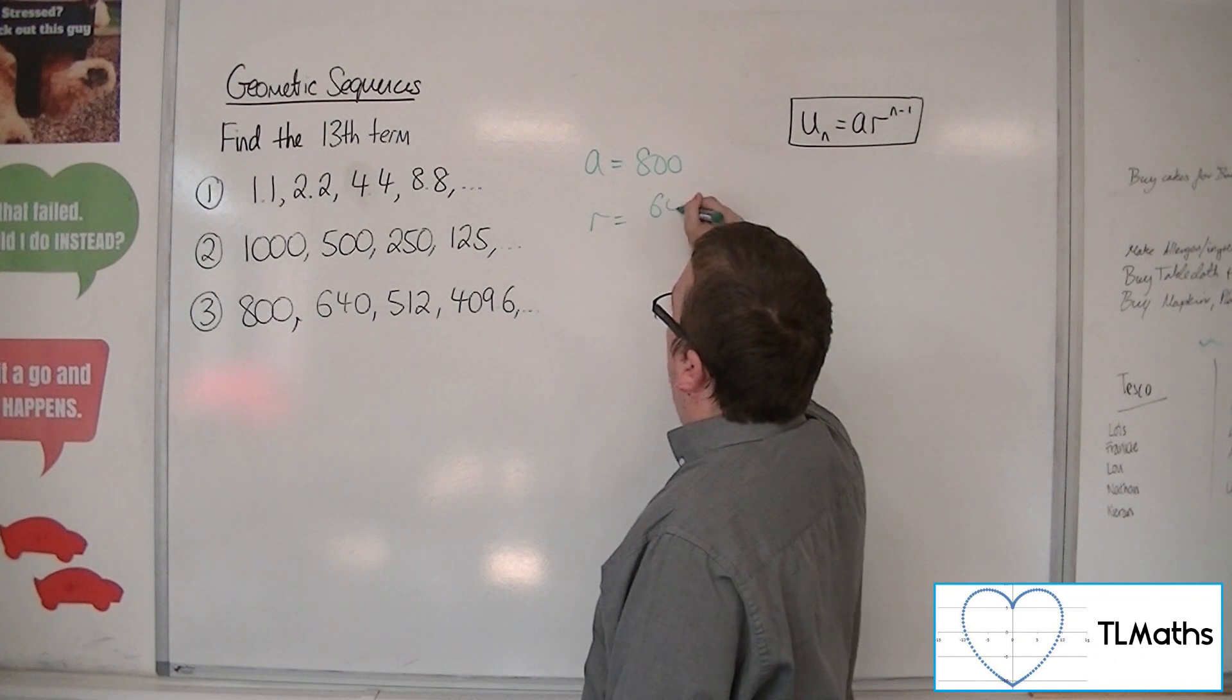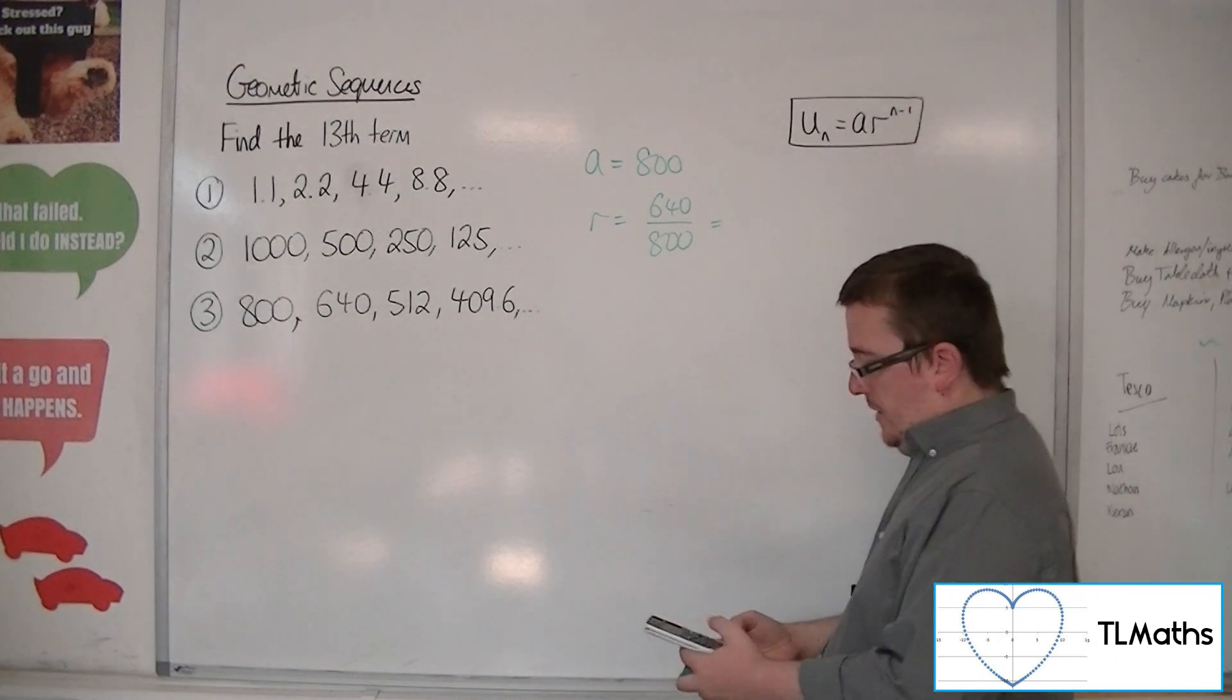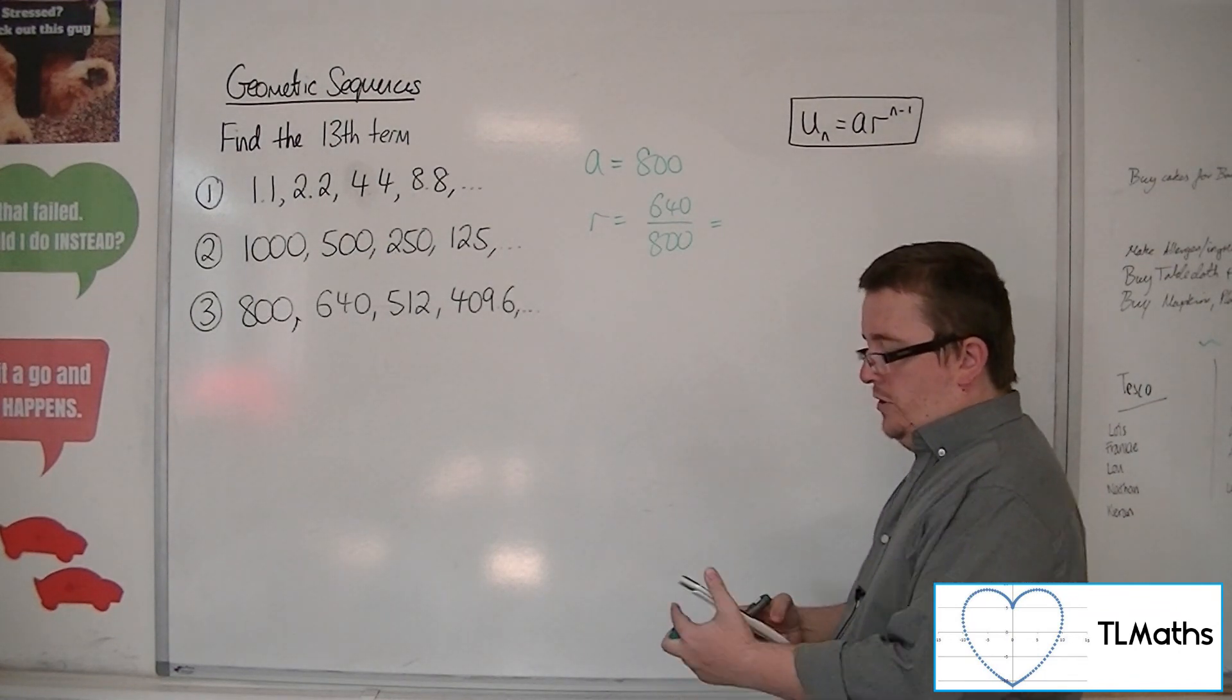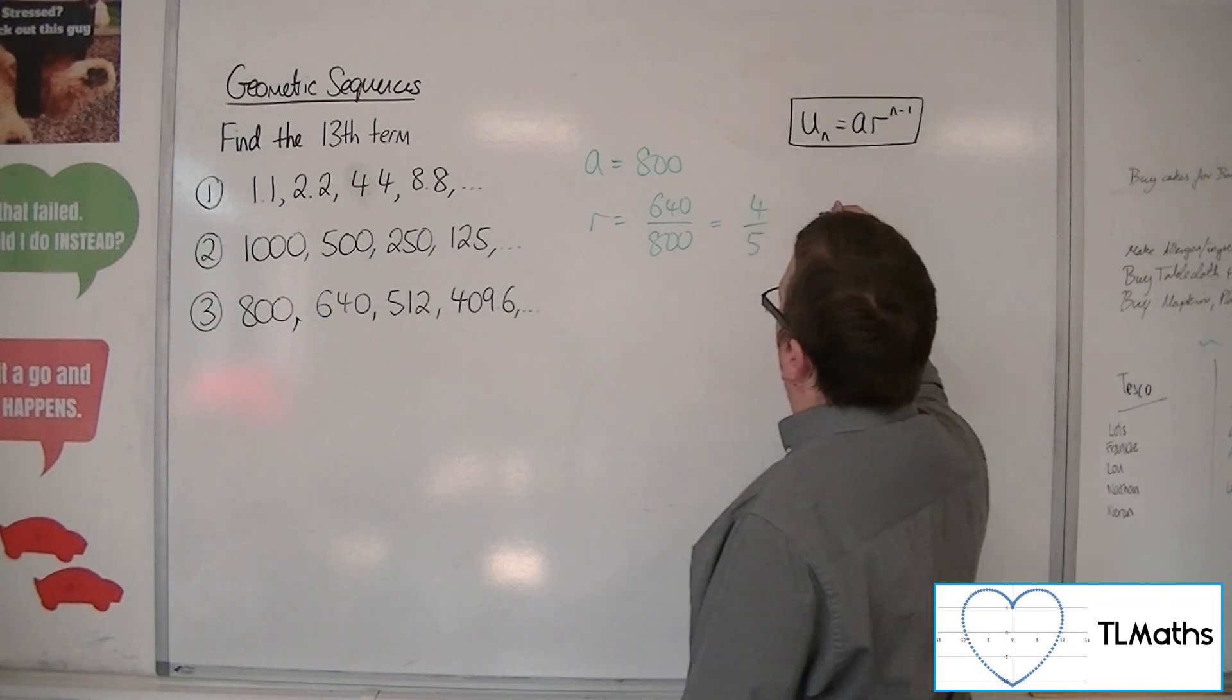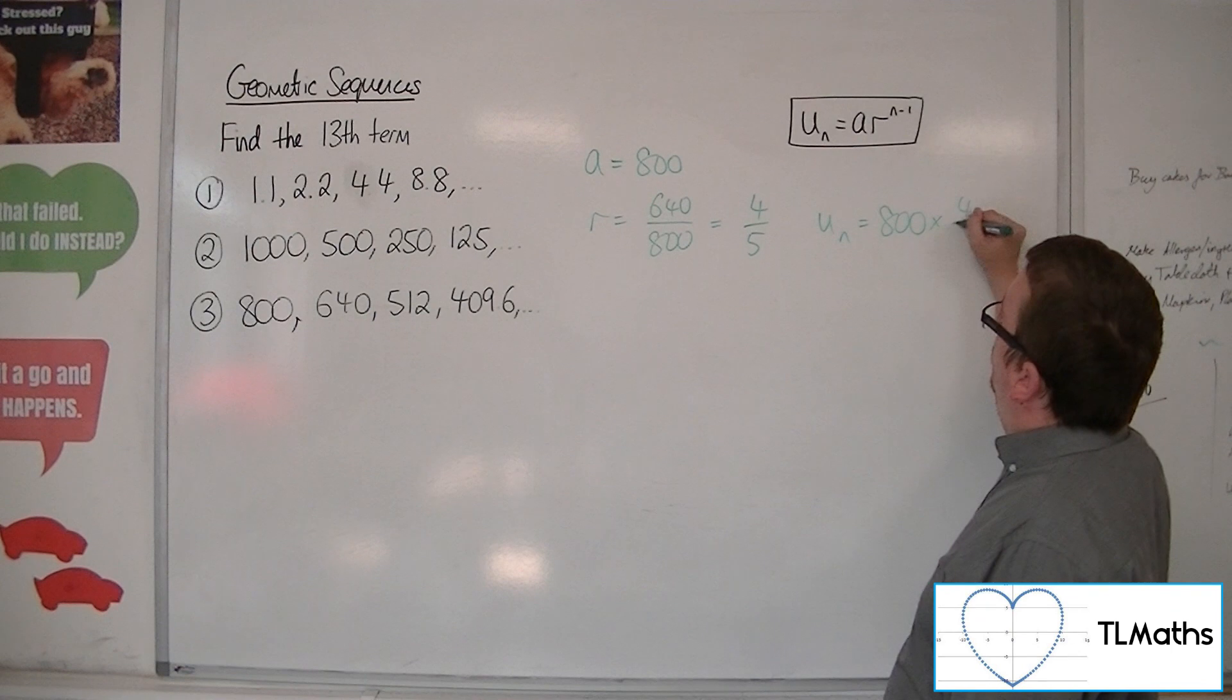Common ratio, 640 over 800. Take one term and divide it by the previous term. So 640 divided by 800 is 4 fifths. So the nth term is a times r to the n minus 1.